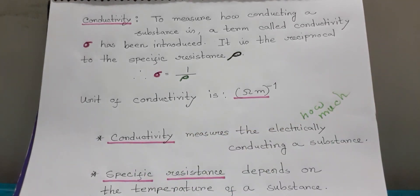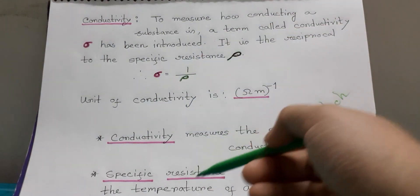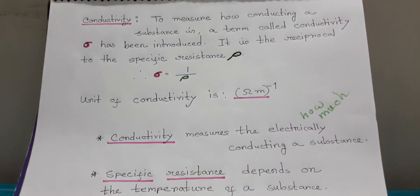Specific resistance depends on the temperature of a substance. I am repeating the full conductivity topic. An object can pass more electricity or less electricity. If electricity can pass more easily through an object, it is called more conducting — the magnitude of conductivity is more. And if less electricity passes through the object, the conductivity is less.